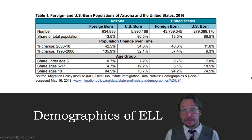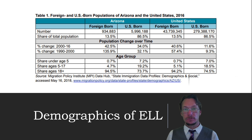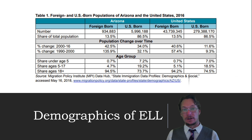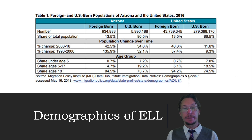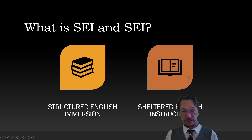A couple more things about demographics: Arizona has 6% of their student population designated as ELLs. Out of Arizona's population, 935,000 are considered foreign-born, and of those, 73,000 are school-aged children. While most English language learners are born in the United States, they have parents or grandparents who have immigrated to the United States.